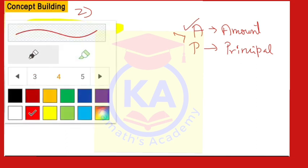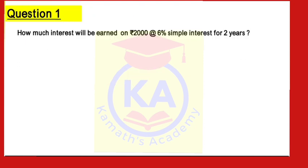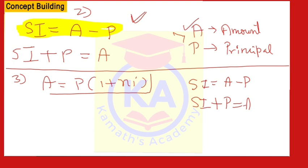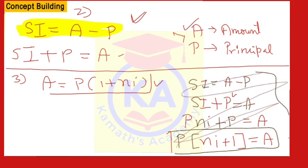Now we will see the third formula: A is equal to P into (1 + NI). How to derive this: from SI = A − P and SI = PNI, we get PNI + P = A, so P(NI + 1) = A. These derivation steps are not required to memorise — only remember the formula. A = P(1 + NI) is the third formula.